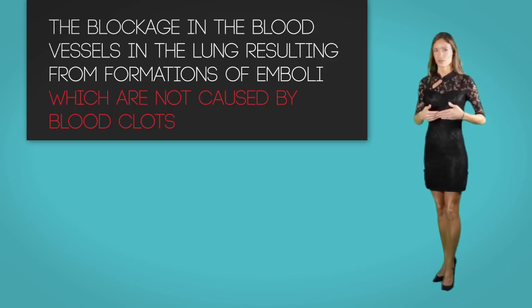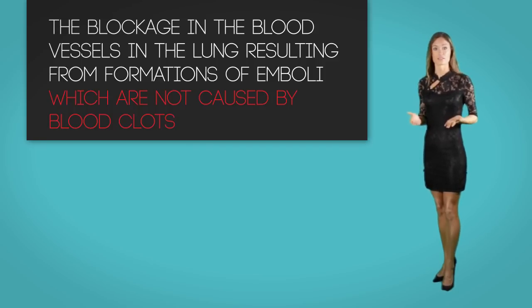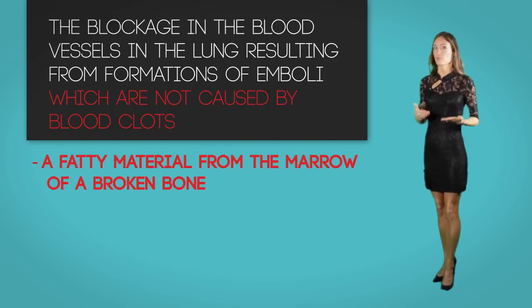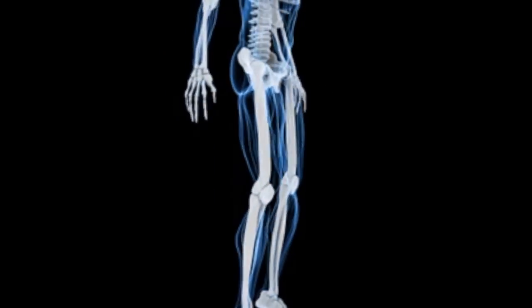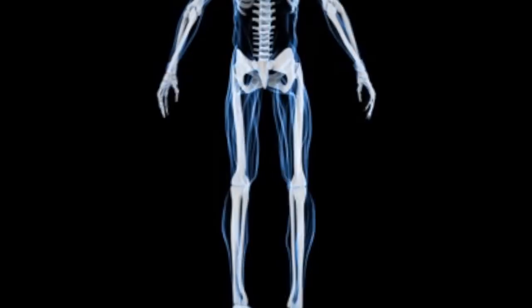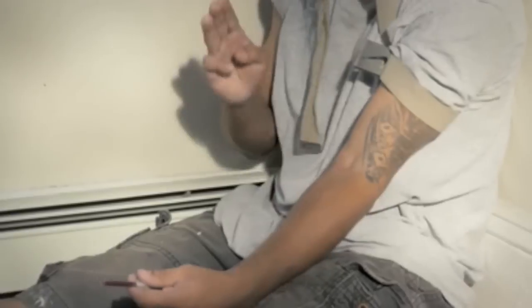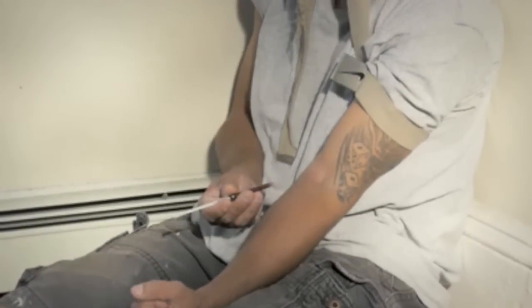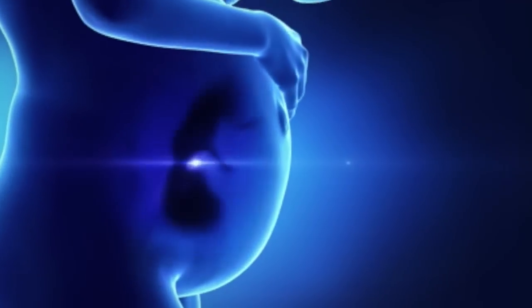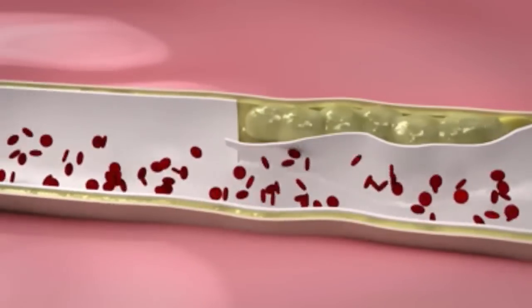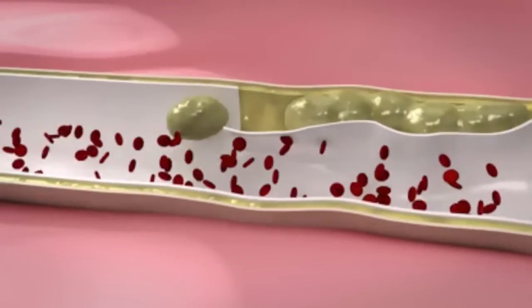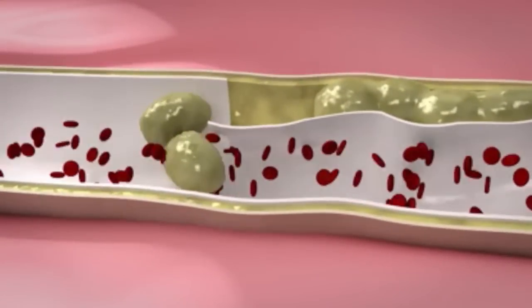In some rare cases, blockage of the blood vessels in the lungs may result from emboli not caused by blood clots. This may include fatty material from the marrow of a broken bone such as the femur, a foreign body from an impure injection such as with drug misuse, amniotic fluid from childbirth or pregnancy, a large bubble of air in the vein, or a small piece of tumor that has broken off from a large tumor in the body.